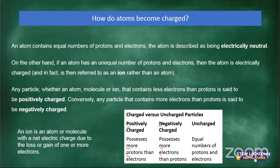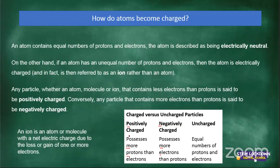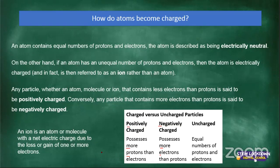To recap: MEN — more electrons, negatively charged. PMP — more protons, positively charged. You can also say MP squared: more protons, positively charged. When writing a test, write these mnemonics on your working paper to refresh your memory, because during an exam you may get stressed and make mistakes.